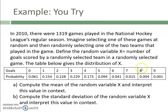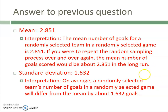Let's try one on your own — press pause, read it over, and try it, then I'll show you the answers. The mean was 2.851 and the standard deviation was 1.632. Make sure you show the beginning steps of the calculations by hand and give a proper interpretation. The next video is going to talk about continuous random variables, so stay tuned for that.